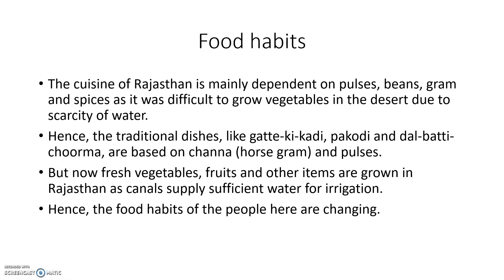Now, moving on to food habits. The cuisine of Rajasthan is mainly dependent on pulses, beans, grams and spices, as it was difficult to grow vegetables in the desert due to the scarcity of water. Because of very less and scanty rainfall, vegetables and crops don't grow well there. Hence, the traditional dishes like gatti, kikadi, pakodi and dal baati churma are based on chana, horse gram and pulses.